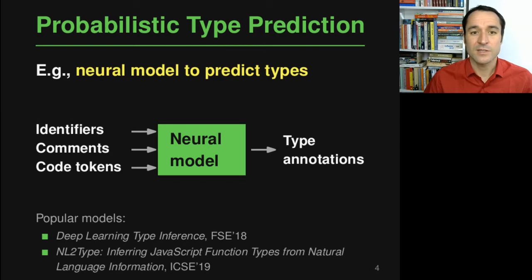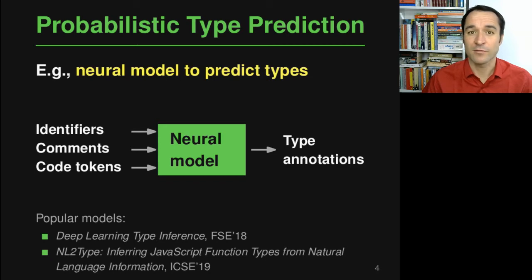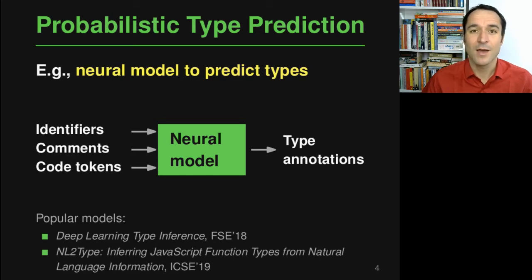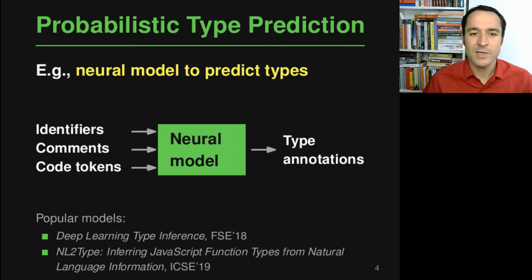For example, these models look at identifiers because identifiers often give great hints about the types of functions and variables. They may also look at comments because that natural language information is helpful to guess what type to annotate, and of course they also look at the code in the form of code tokens. There have been a couple of popular models proposed over the past few years, which we compare against in this work.